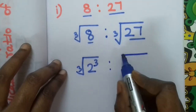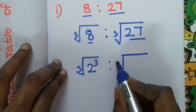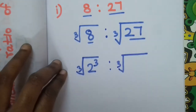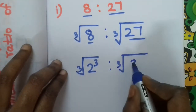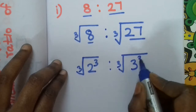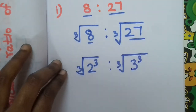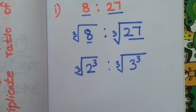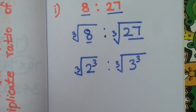Similarly, the cube root of 27 — 27 is 3 cubed, because 3 multiplied by 3 is 9, and 9 multiplied by 3 is 27. So repeating the multiplication 3 times gives you 27.